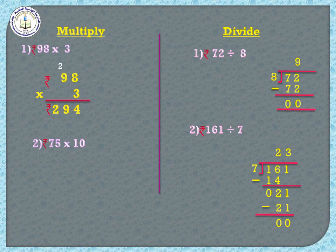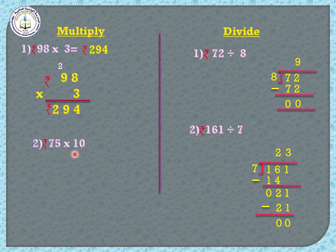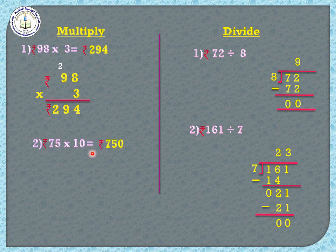Now it's time for problem solving. Multiply: rupees 98 into 3. Arrange: 3 eights are 24 — write 4, carry 2; 3 nines are 27, plus 2 is 29. The answer is 294. Next: rupees 75 into 10. Remember the trick for multiplying by 10 — there is one zero in 10, so add one zero at the end of the number. 75 becomes 750. The answer is rupees 750.